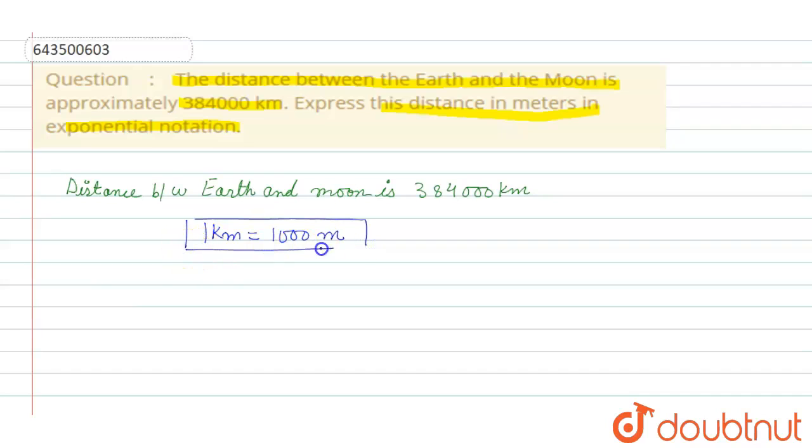Now we know that one kilometer equals a thousand meters, so 384000 kilometers will be equals to 384000000 meters.